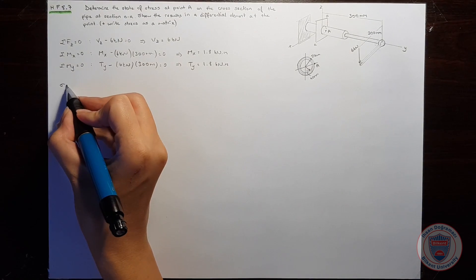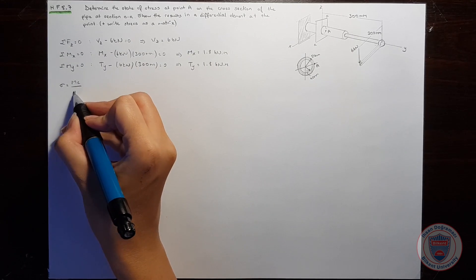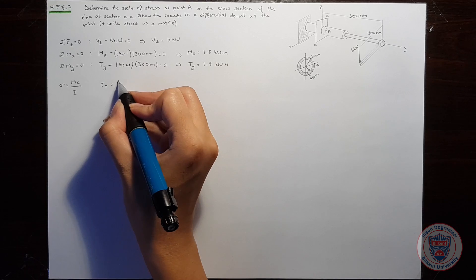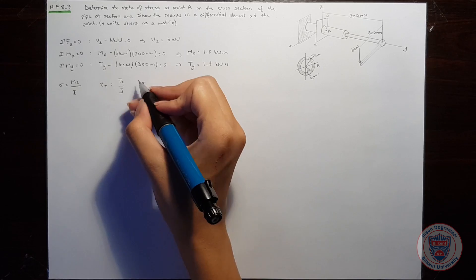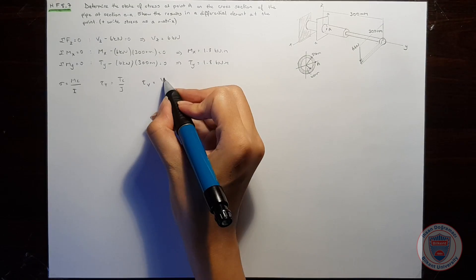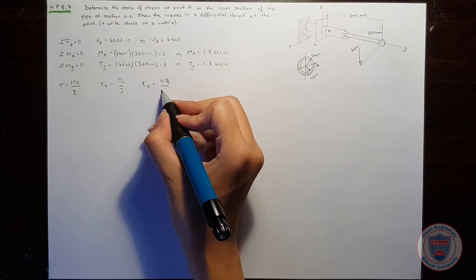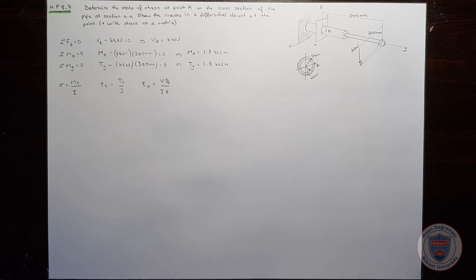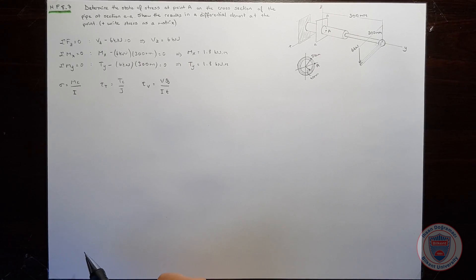We know that the normal stress will be equal to the moment times C over the moment of inertia. The shear stress caused by the torque will be equal to torque times C over the polar moment of inertia. To calculate these stresses, we will need to calculate the moment of inertia, the polar moment of inertia, and the first moment of area with respect to the z-axis.